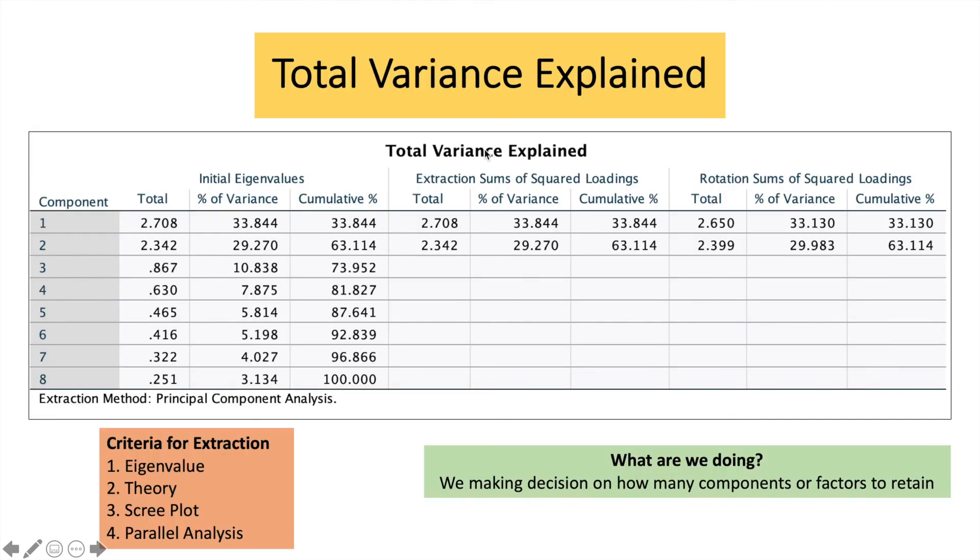And it's similar to this table here, where we have picked up component one and component two. So what we have done so far in making decision on how many components or factors to retain, I've covered with you the first one, which is eigenvalue. We have already looked into the scree plot. Next, we'll be moving into parallel analysis, which will be covered in the fourth part of the video.